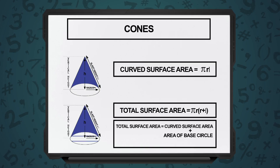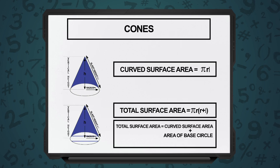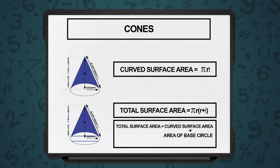Now, for curved surface area of a cone, the formula is pi r l. Remember, it is l, the slant height. Curved surface area of a cone is pi r l. And total surface area of a cone, which means we are taking the circle — in this case, there is only one circle at the base — so pi r squared. So, pi r squared plus pi r l. You can say total surface area of a cone is pi r into bracket r plus l.